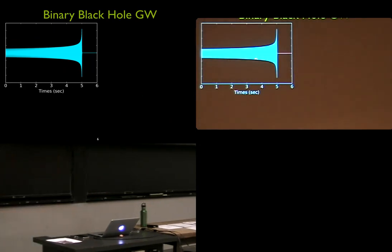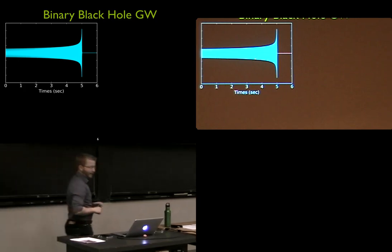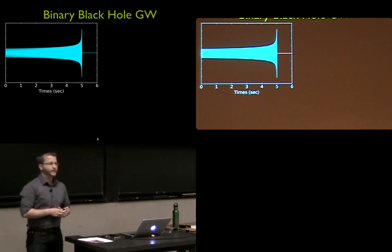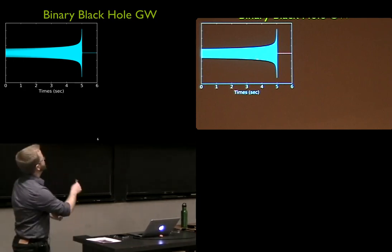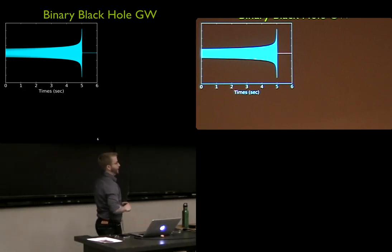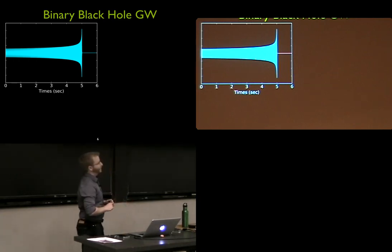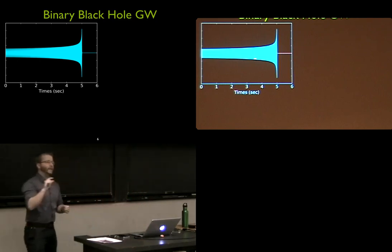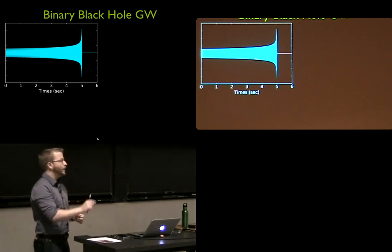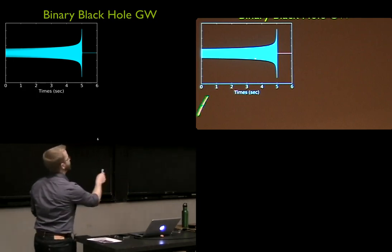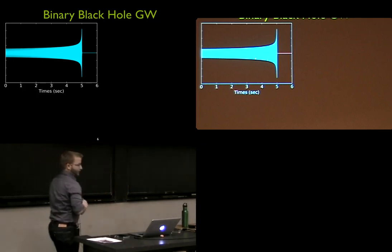Now let's look at our signal. This should be very familiar at this point in the lecture series. This is the gravitational wave from a compact binary coalescence, specifically a binary black hole merger. This is the classic chirp that we look for in LIGO. We look for this characteristic signature in that noise — the noise is very random, we know the spectrum of the noise, and we look for very small deviations to that noise that are exactly indicative of this kind of signal in the data.